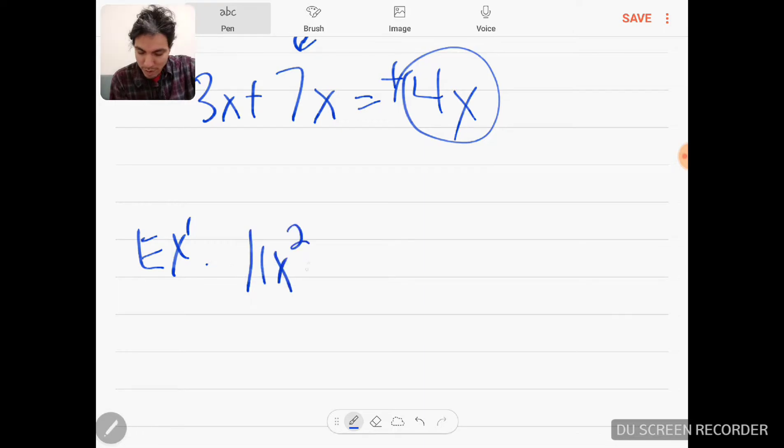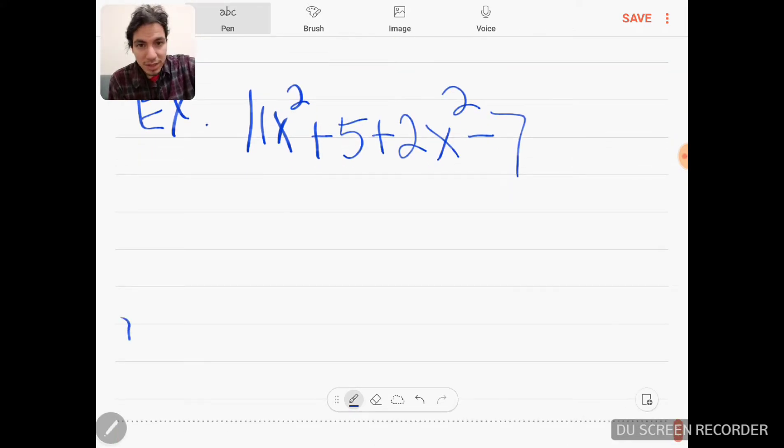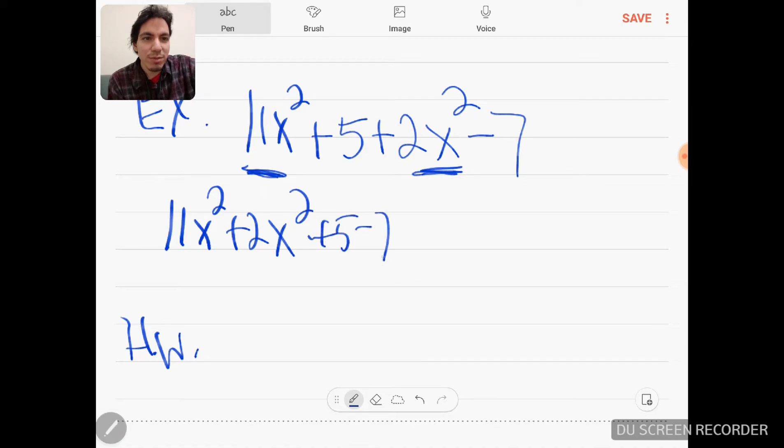Let's try this one: 11x^2 + 5 + 2x^2 - 7. The best step I would recommend is to reorder it because it's commutative. I like to put them together: 11x^2 + 2x^2 + 5 - 7. You get 13x^2 because 11x^2 + 2x^2 is 13x^2, minus 2 as your final answer.